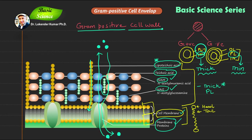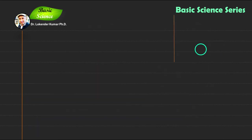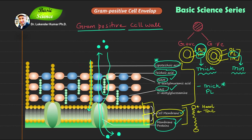In exams, the examiner may ask about the ultrastructure of the gram positive cell wall, the function of individual components in the bacterial cell, the function of the gram positive cell wall in general, the difference between lipoteichoic acid and teichoic acid, and the function of membrane proteins.